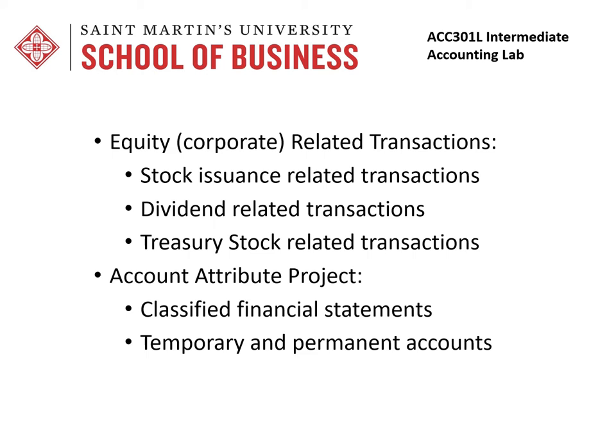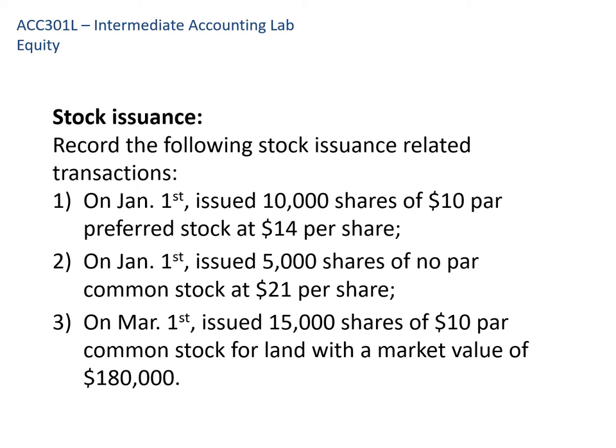The first topic is stock issuance. Remember, when companies issue stock it depends on their state laws — they could issue stock with a par value or with no par value. Some states have a stated value, which is equivalent to par value. When we do these entries, remember that we're receiving either cash or assets. We increase common stock using the par value for that side of the entry, and if there is a par value, we'll have paid in capital in excess of par. Please pause this video and record these three transactions on your journal entry paper.